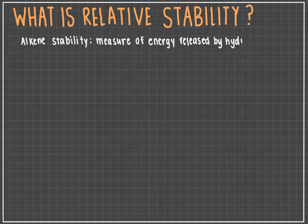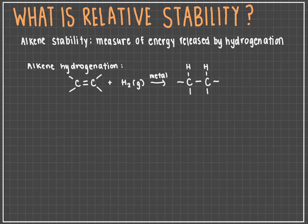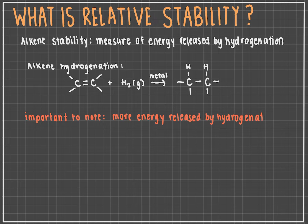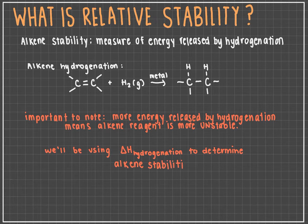Alkene stability is a measure of the energy released by its hydrogenation. This hydrogenation is the simple addition reaction of H2 gas in the presence of a metal catalyst to create a saturated hydrocarbon, or alkane. Something important to note is that the more energy released via this hydrogenation, or the more negative the number, the more unstable the alkene reagent was prior to the reaction, or the more potential energy that was within its bonds. So in short, we will be using enthalpies of hydrogenation, or delta H of hydrogenation, to determine how stable or unstable two alkene isomers are to one another.